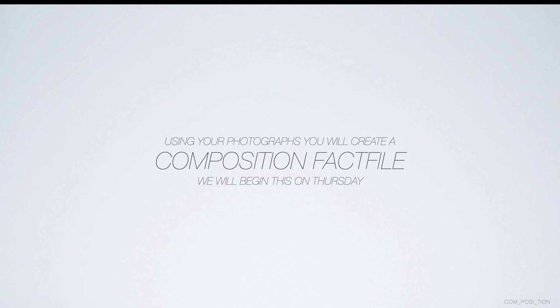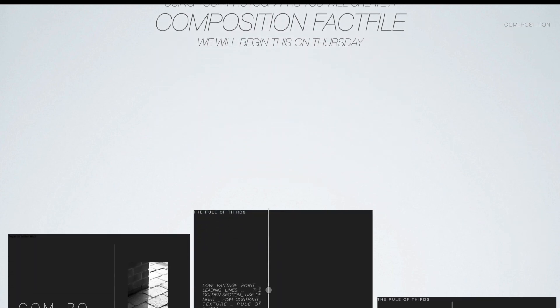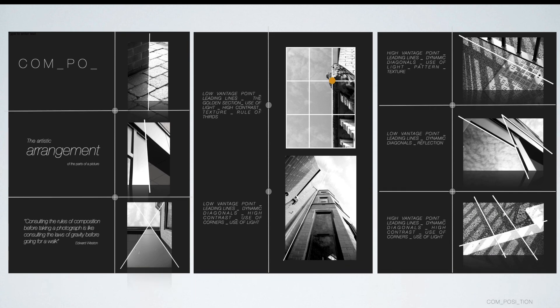On Thursday we'll do a little quiz to see if your knowledge of composition has improved. Then I'm going to get you to put together what's called a compositional fact file — similar to what you've done with the camera obscura, but this time using your own images that you've taken. You'll be converting them to black and white, leveling them, creating a layout, and highlighting and annotating those technical terms next to the images — using diagrams to demonstrate perspective, where the leading lines are, and where the rule of thirds has been applied. You'll be creating something like this in Thursday's lesson and into Friday's support session.